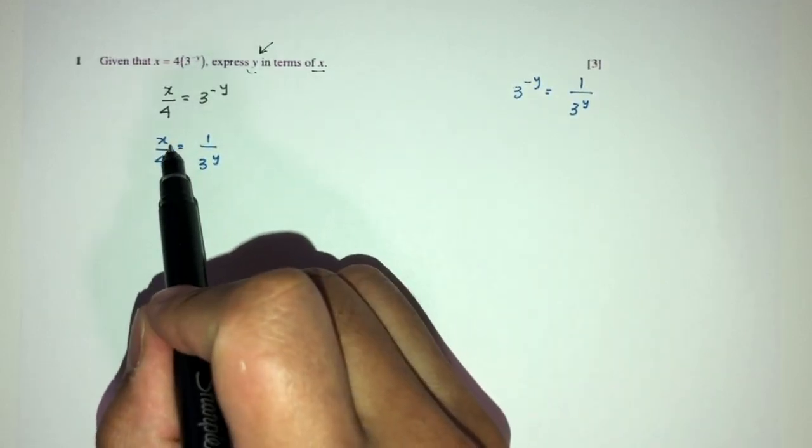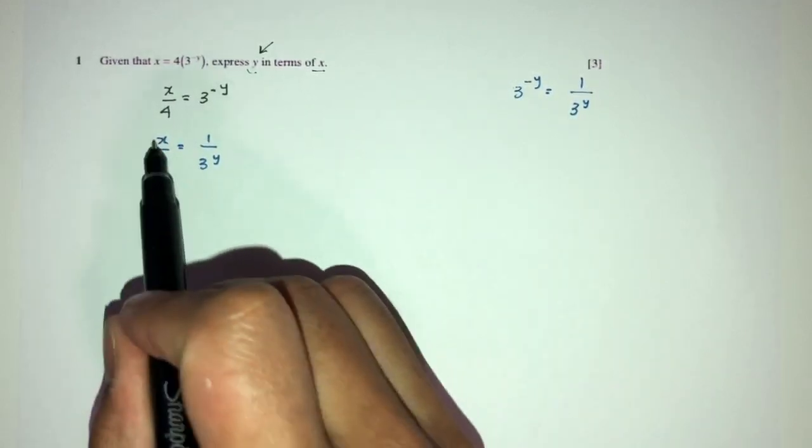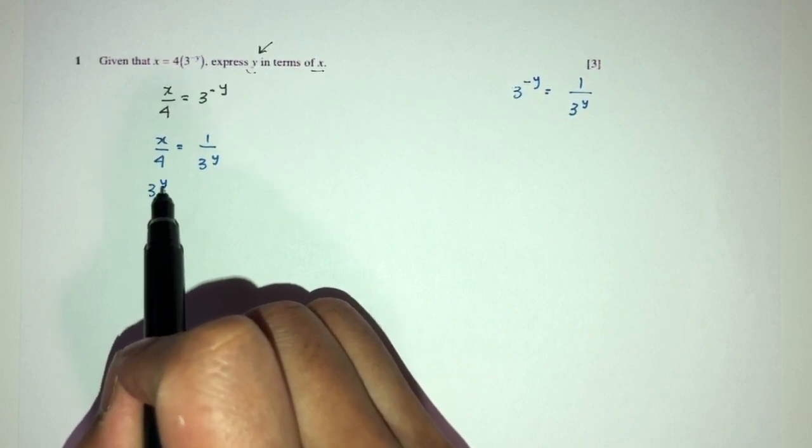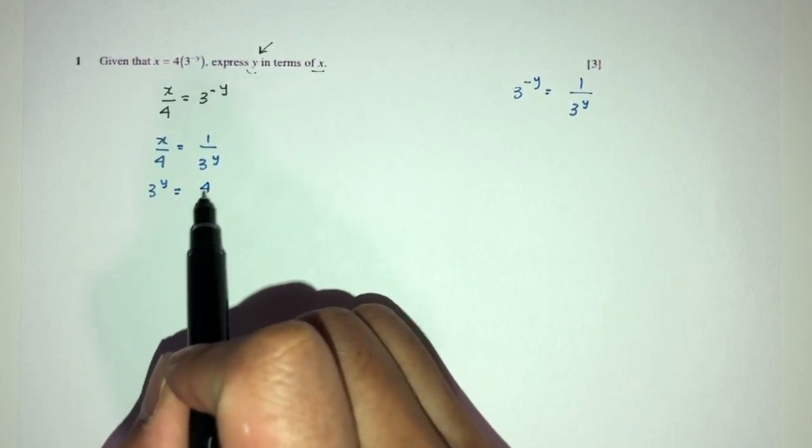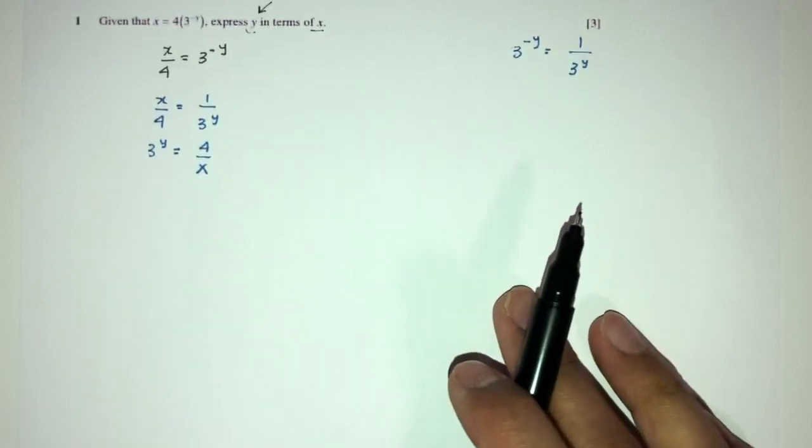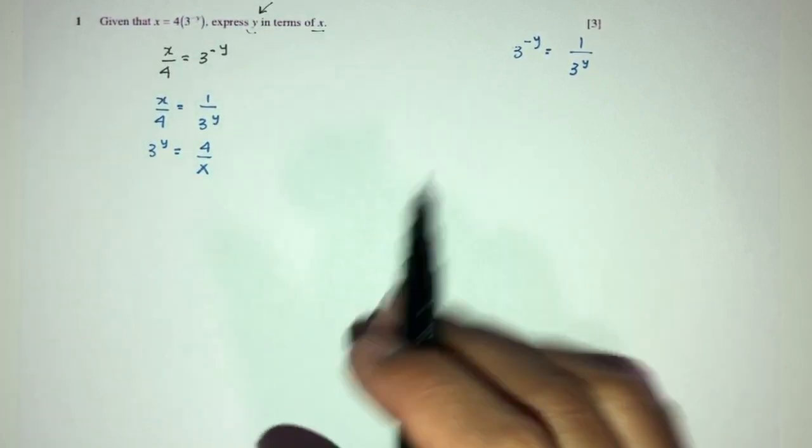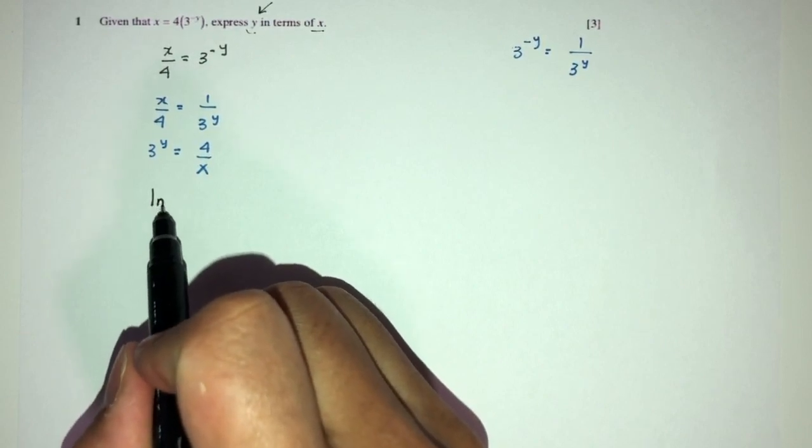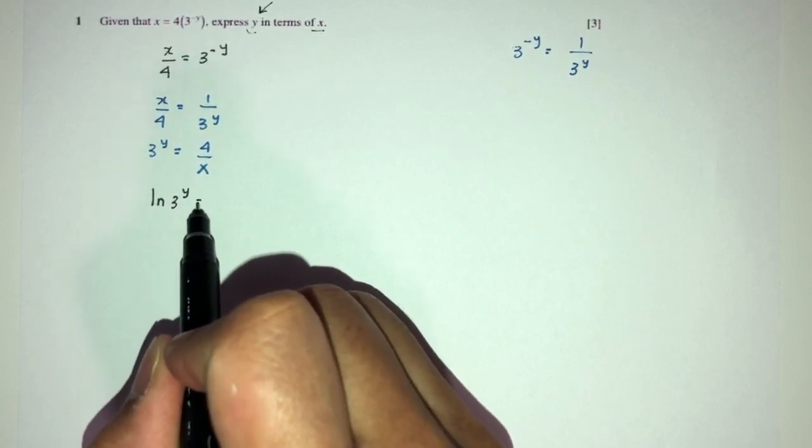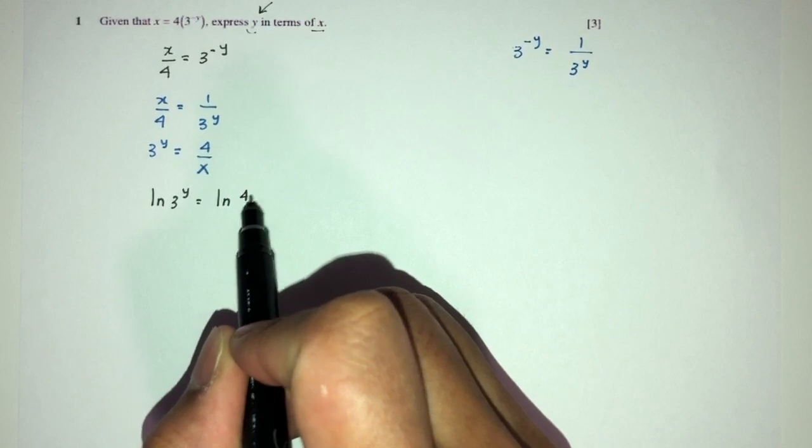I can cross-multiply. Send this down, send this up, and this up, you will have 3 power y is equal to 4 over x. Now, how would you make y become subject? You have to apply ln on both sides. You will have ln of 3 power y over ln of 4 over x.